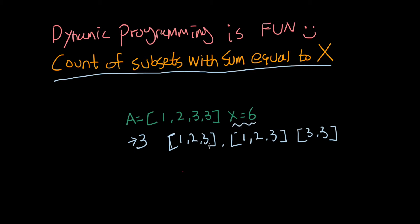This first three is this three in the array, and this second three is the other three in the array. All of these threes are different elements — this three is this three, this three is that three. So the answer is three.